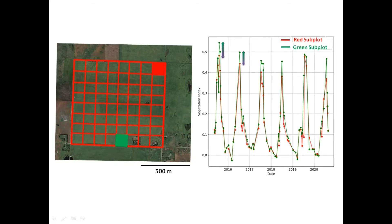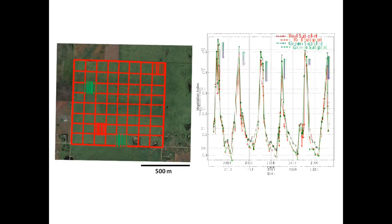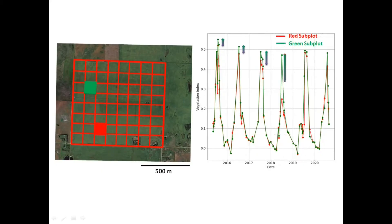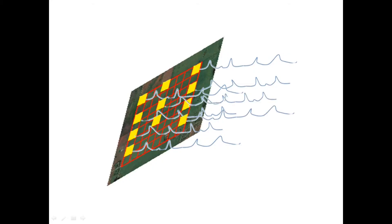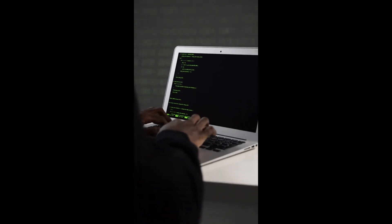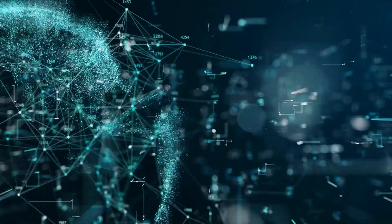For example, the subplot highlighted in green consistently overperformed the one highlighted in red. Each subplot could be as small as only one pixel of the satellite image, which corresponds to a 10-meter by 10-meter area on the farm. Each historical curve from each pixel or subplot indicates its future performance. Although such data is overwhelming for the human mind, artificial intelligence models can digest and extract hidden patterns from it.